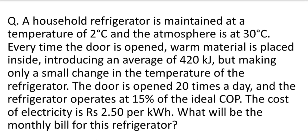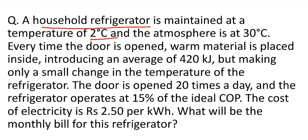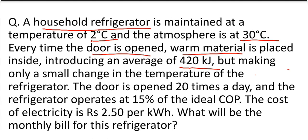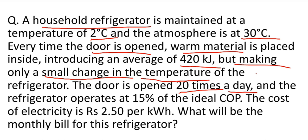Here in the given question, there is a household refrigerator which is maintained at 2 degree Celsius and atmospheric temperature is 30 degree Celsius. Every time the door is open, warm material of 420 kJ enters inside, making only a small change in the temperature of the refrigerator. That means when 420 kJ of heat enters inside, the refrigerator removes it and maintains the same temperature. The door is open 20 times in a day and the refrigerator operates at 15% of ideal COP.